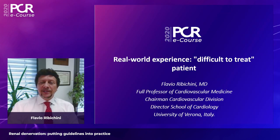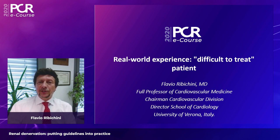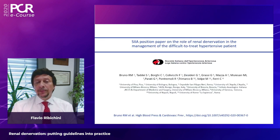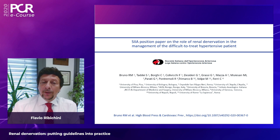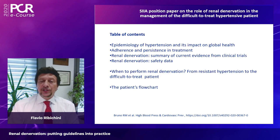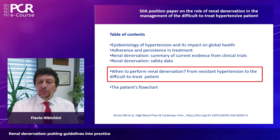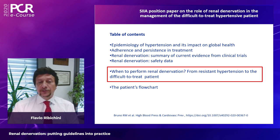Hello, ladies and gentlemen. I am Flavio Ribicchini, interventional cardiologist and director of the Division of Cardiovascular Medicine at the University Hospital in Verona, Italy. I have no conflicts of interest. My session focuses on a recently published position paper from the Italian Association of Hypertension, addressing when to perform renal denervation in patients with resistant or difficult-to-treat hypertension.